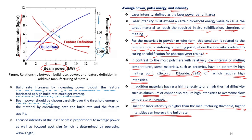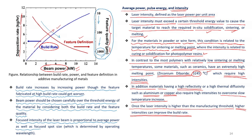Beam power should therefore be chosen carefully above the threshold energy of the material by considering both build rate and feature quality. The focused intensity of the laser beam is proportional to average power as well as focused spot size, which is determined by the operating wavelength. Intensity, or flux, is power divided by area — this is an important relationship already established. These parameters must be balanced carefully in laser-based additive manufacturing.